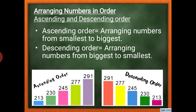For example, in ascending order we keep the smallest digit first and then move to the bigger digits. In descending order we keep the greatest digit first, then move to smaller digits, and finally the smallest.